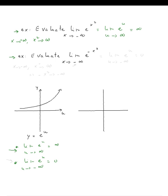For this last example, using substitution, this equals the limit of e to the u as u approaches — as x approaches infinity, x squared is positive, but then you multiply it by negative one, so it's going to be negative. This is going to be negative infinity, and then using that definition, the answer will be 0. And that's it for this example.